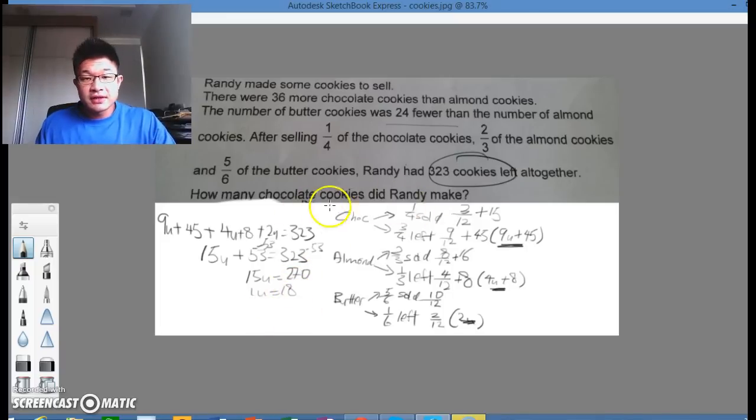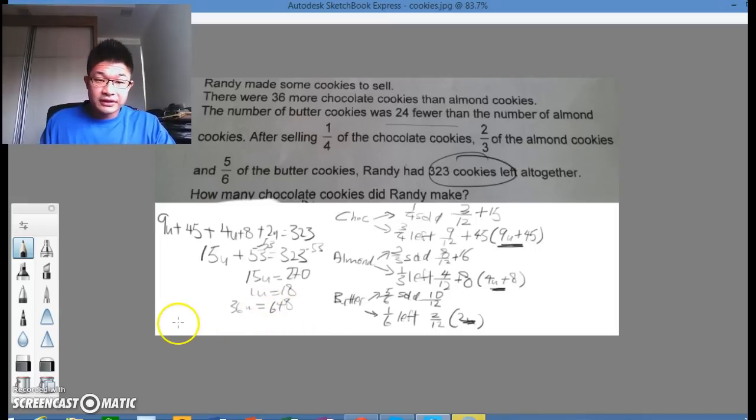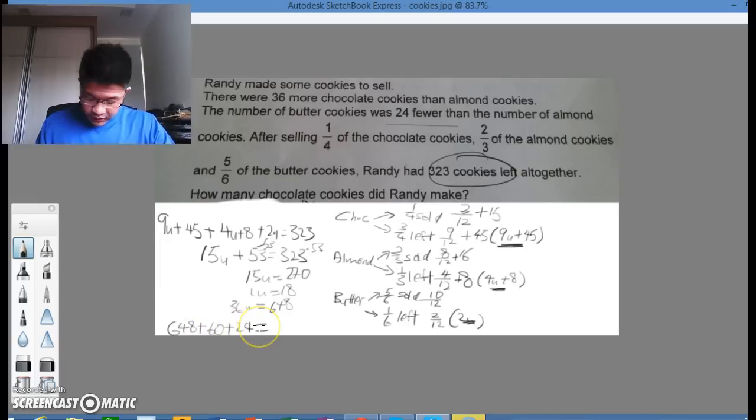So how many cookies did Randy make? Well, if you could remember the model, each one of the units became twelve, so actually there are thirty-six units. Would be six hundred and forty-eight. And not forgetting the sixty and the twenty-four. So it's actually six hundred and forty-eight plus sixty plus twenty-four and you end up with seven hundred and thirty-two.